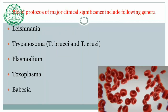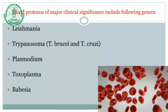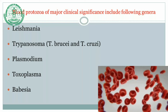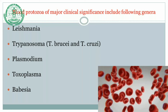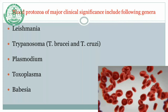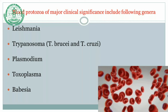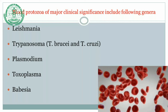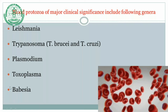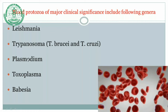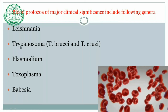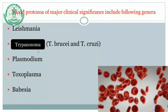Important blood protozoa of major clinical significance include: Leishmania (already covered), Trypanosoma with important members Trypanosoma brucei and Trypanosoma cruzi, Plasmodium, Toxoplasma, and Babesia. The first two — Leishmania and Trypanosoma — are hemoflagellates; the rest are not flagellates and will be covered in subsequent lectures. Today we are covering the hemoflagellate Trypanosoma.